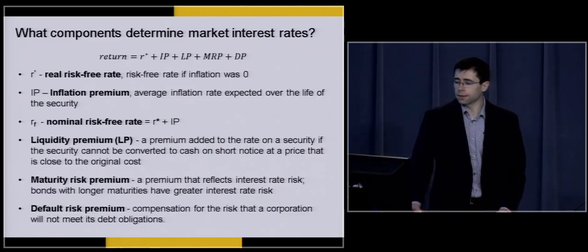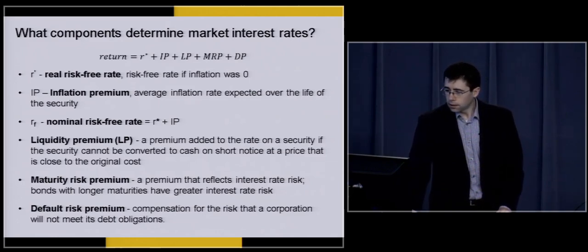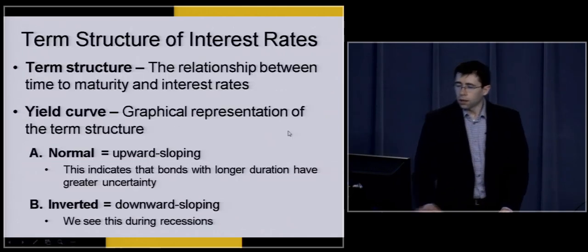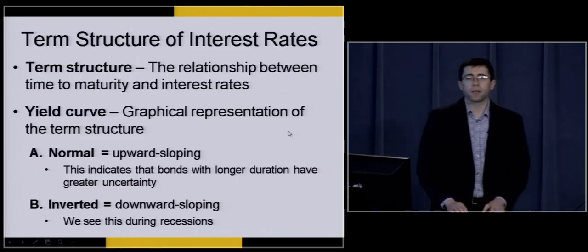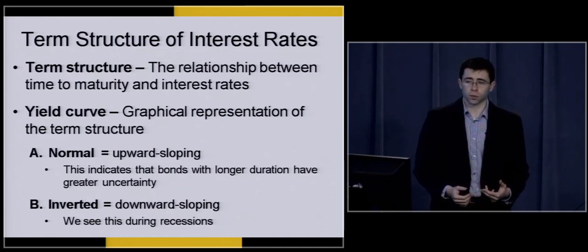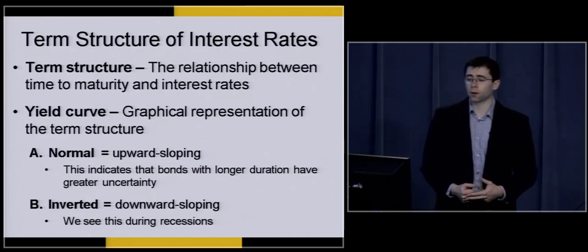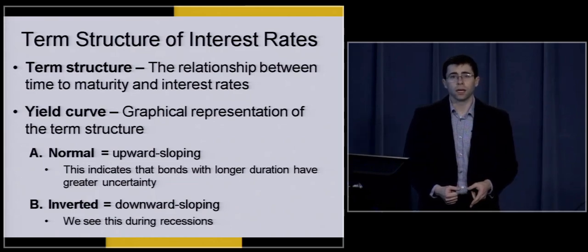That additional compensation comes in the form of our default risk premium. The greater the likelihood of default of the issuing party, the greater the compensation you as an investor should demand from that issuing party before you buy their bonds. Now, there are a couple of definitions we need to talk about now that we've covered what factors play a role in interest rates. The first definition is what's called term structure.